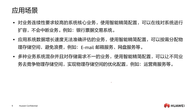Let's take a look at the application scenarios of SmartThin. Based on its features, SmartThin can be applied to the following scenarios. For example, the bank bill trading system — this kind of business generally requires high continuity for core system operations. We can use the SmartThin feature so the system can be expanded online without interrupting business. It can also be used in mailbox and cloud disk services and other application data scenarios.